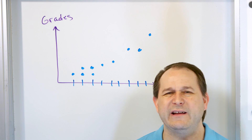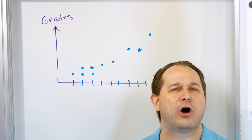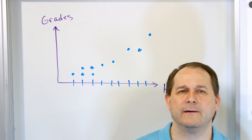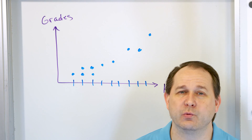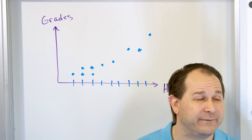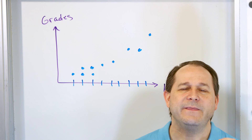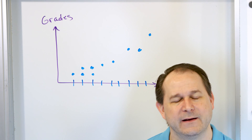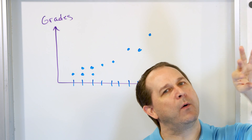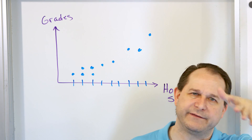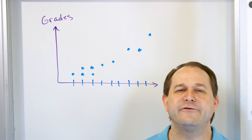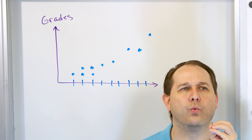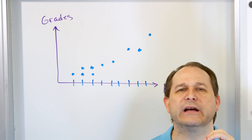I want to draw something to your attention that is extremely important — one of the most important lessons in all of science and math. That is the definition, or the difference, between correlation and causation. When two things are correlated, it just means they both go up, or maybe one goes down as the other goes up. It just means the data are related to each other in some way, but it doesn't say anything about one of them causing the other.